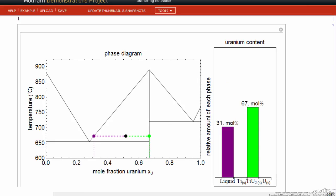If I were to change the composition, now I'm in the region of the two solids: pure uranium, so its mole fraction is 1, and the stoichiometric compound.